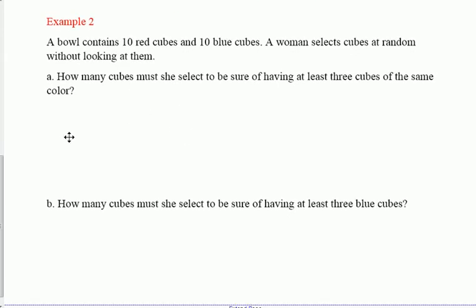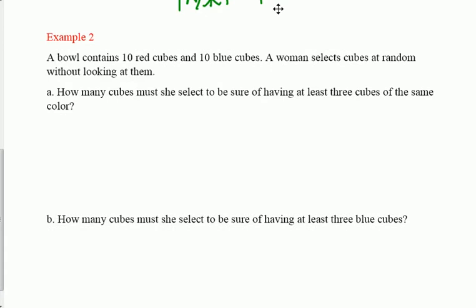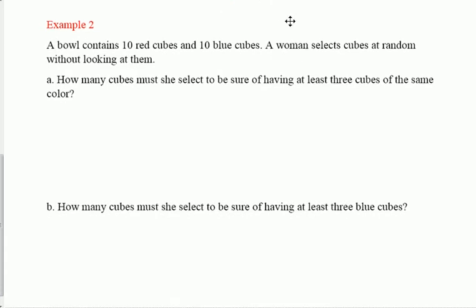Here we go. I've got blue and red cubes. You have a bowl of them apparently, and this bowl contains 10 red cubes and 10 blue cubes. A woman selects cubes at random without looking at them. How many cubes must she select to be sure of having at least three cubes of the same color? Again, worst-case scenario method. Without loss of generality, we'll start with red.